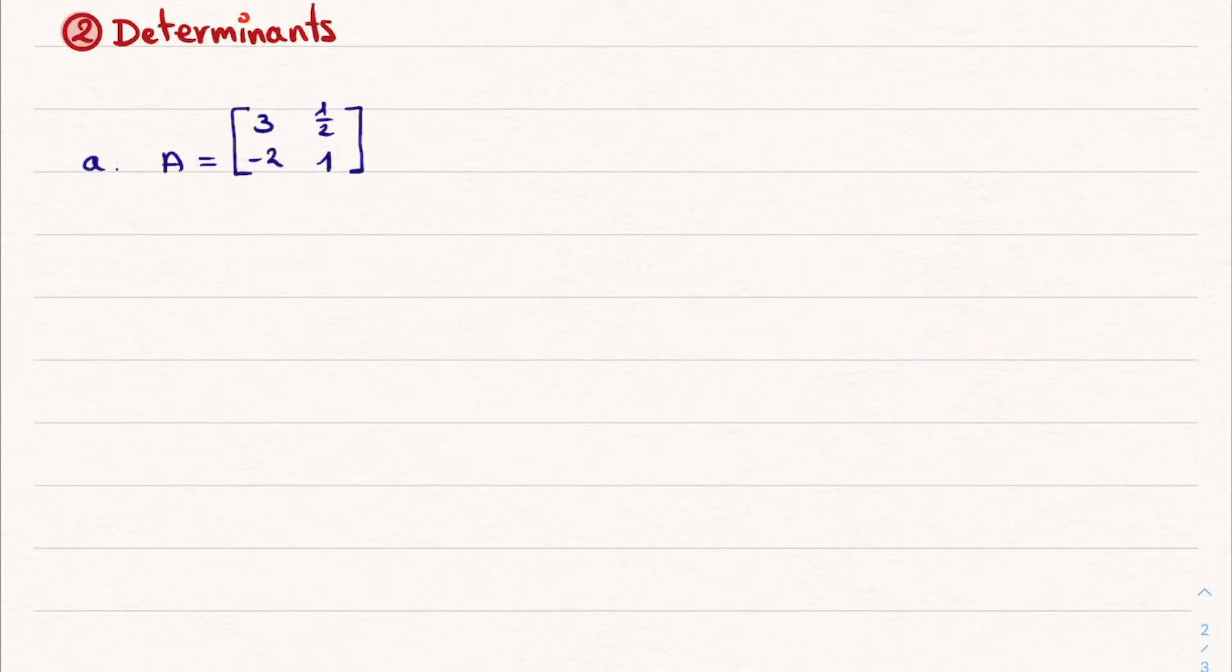The second important object when it comes to matrix algebra is the determinant of a matrix, and how to calculate it. Note that only square matrices have determinants. Let's again start with a 2 by 2 matrix called A.